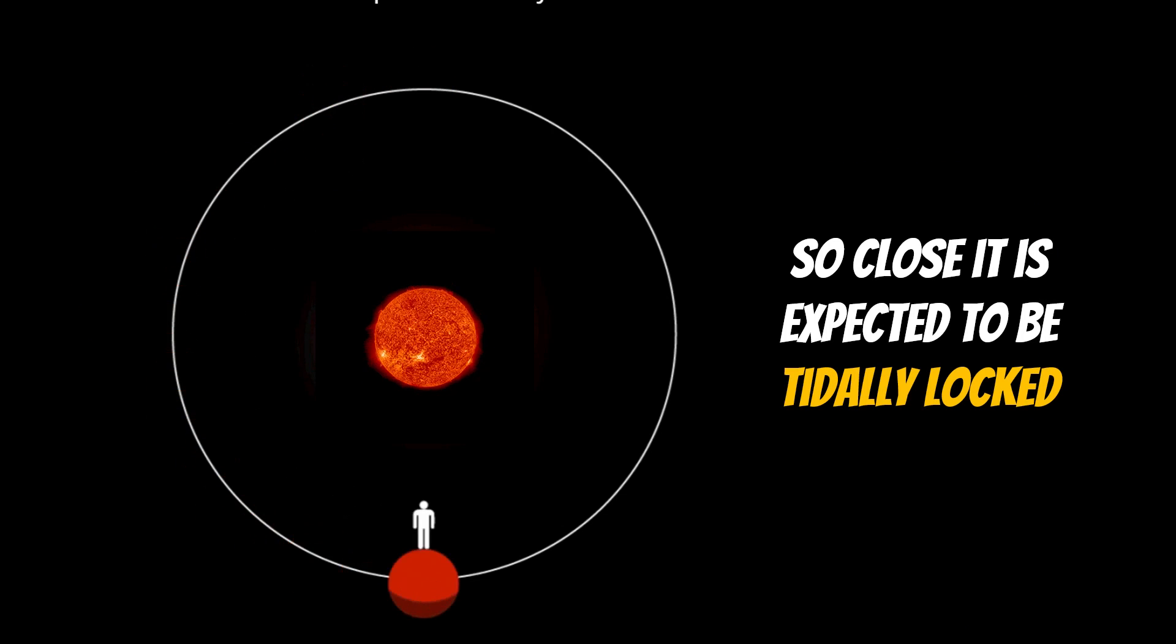Because it's so close, it's expected to be tidally locked. When planets get very close to their star, the strong tides from the star actually slow its rotation down to the point where the same face is always facing towards the star as it goes around. So one rotation of the planet equals one orbital period. You're always going to have a day side and a night side.